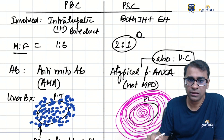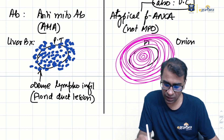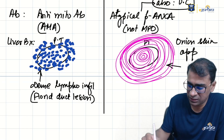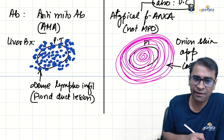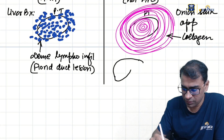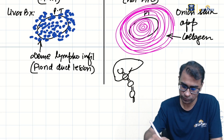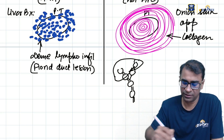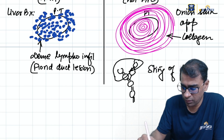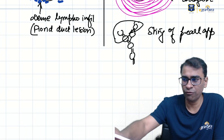In PSC, the biopsy shows collagen proliferation in and around the bile duct, giving an onion skinning appearance due to concentric collagen deposition. Outside the liver, the bile ducts show a beaded appearance — both intra- and extrahepatic — known as string of pearl appearance.